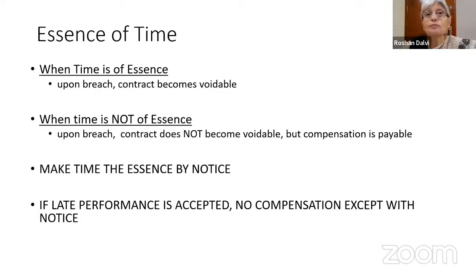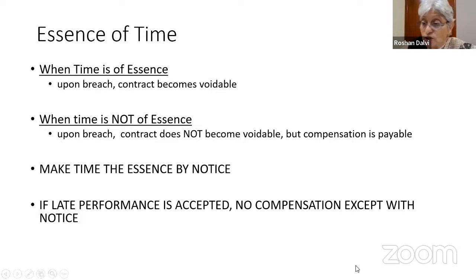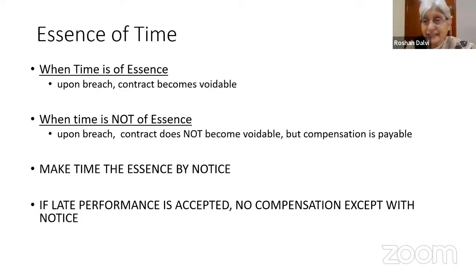When time is not of the essence, the other side would be entitled to compensation. In many cases, especially construction contracts — roads, highways, etc. — a party starts the work but there are supervening impossibilities. Cement is not available, steel is not available. The party says this is vis major, there were floods. The other party says, I am giving you an extension. That is because time was not of the essence — he has to do it within a reasonable time, which can be extended.